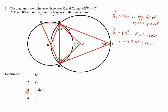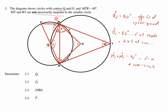For 3.3, find angle PMO. PMO = M1 + M2 + M3. Focusing on the smaller circle: PR passes through center Q, making PR a diameter. A diameter subtends 90° on the circumference, so M1 + M2 = 90° — angles in a semicircle.